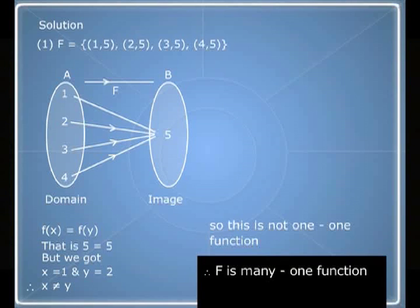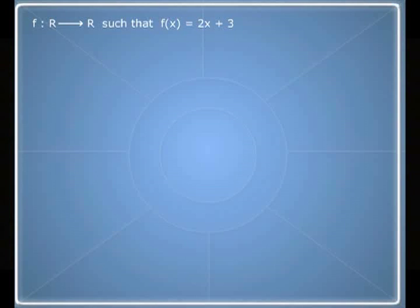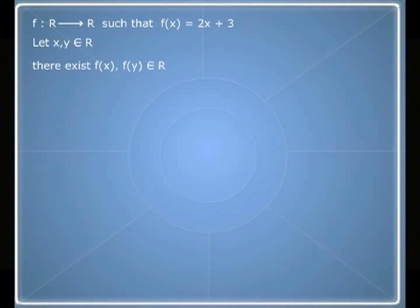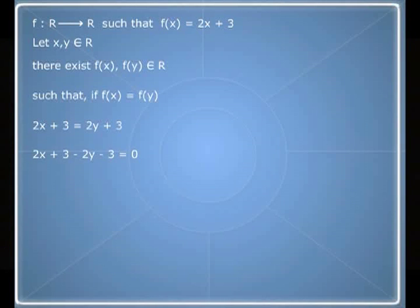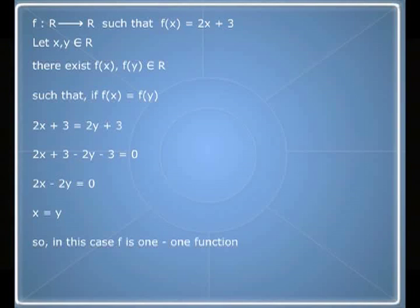Or we can say that f is many-to-one. For the second function, f is a function from R to R such that f of x is equal to 2x plus 3. Let x and y belong to R and suppose f of x equals f of y. This implies 2x plus 3 equals 2y plus 3, which implies 2x minus 2y equals zero, which implies x equals y. So in this case f is a one-to-one function.